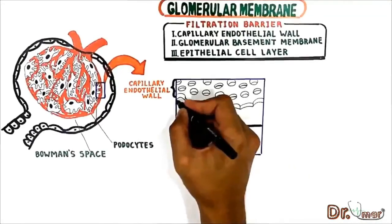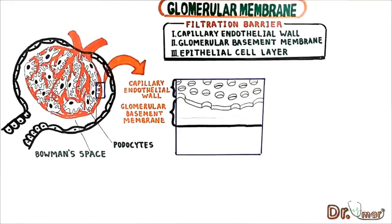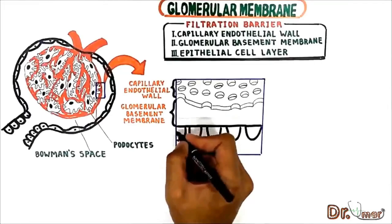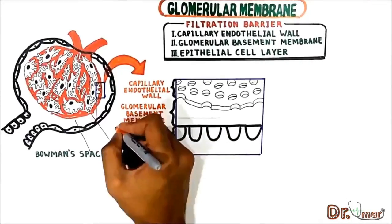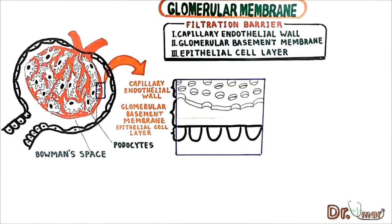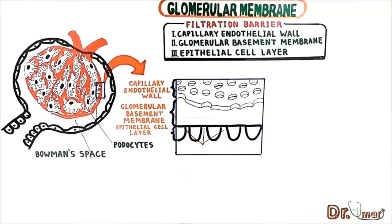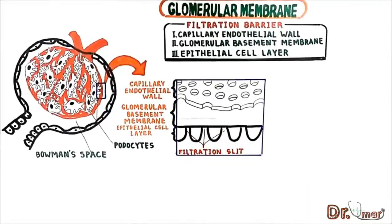The second filtration barrier surrounding the endothelium is the basement membrane, which consists of a meshwork of collagen and proteoglycan fibrils that have large spaces through which large amounts of water and small solutes can filter. The final part of the glomerular membrane is a layer of epithelial cells lining the outer surface of the glomerulus. These cells are not continuous but have long foot-like processes that encircle the outer surface of the capillaries.